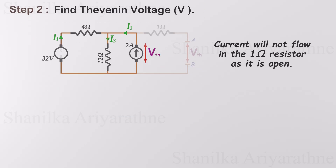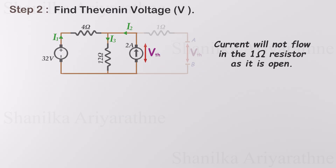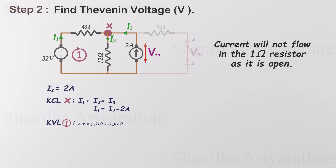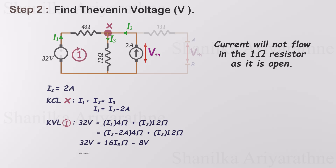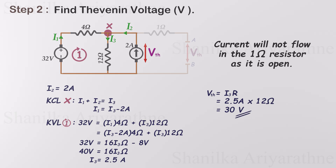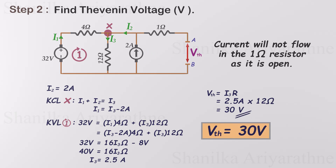Now mark the currents in each branch. Since the current source supplies 2 amps, I2 equals 2 amps. Let's apply Kirchhoff's laws to the circuit. First apply KCL to node X, then apply KVL to loop 1. If you are not familiar with Kirchhoff's law, please watch our Kirchhoff's law video. I3 is equal to 2.5 amps. Using I3, we can calculate the voltage across the 12 ohm resistor, which is 30 volts. This is the Thevenin voltage.